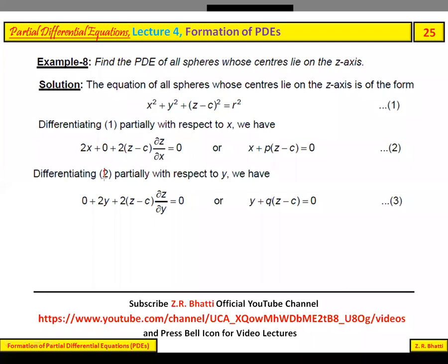Differentiating equation (1) partially with respect to y: x² gives 0, y² gives 2y, and (z - c)² gives 2(z - c)(∂z/∂y) by applying the chain rule. Taking 2(z - c) common, we get 2y + (∂z/∂y)(z - c) = 0, which is equation (3).